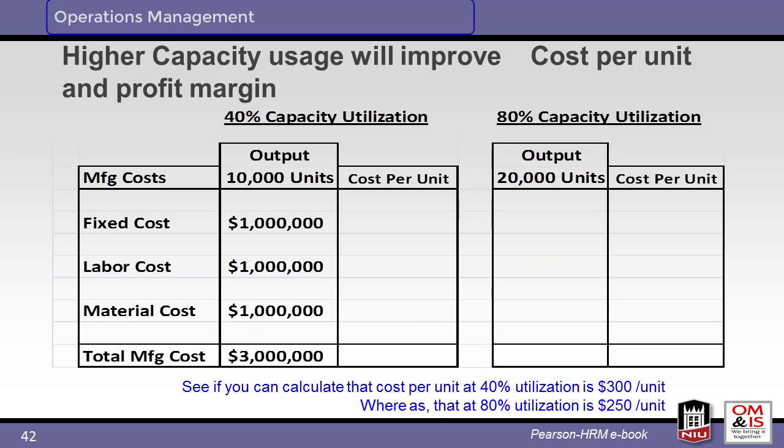Take a minute to work through this new example. We are calculating the cost per unit for two similar production lines: one operated at 40% capacity utilization producing 10,000 units, and a second line operating at 80% utilization producing 20,000 units in the same time. Are your results the same as shown on the slide?